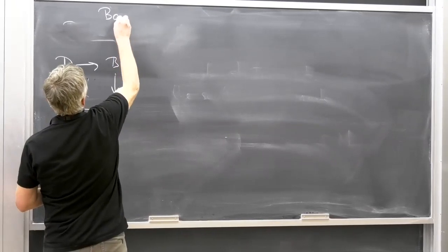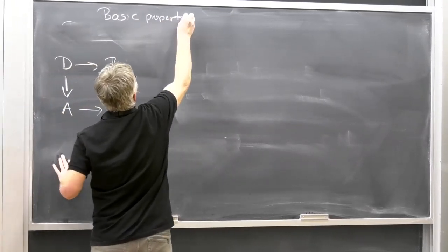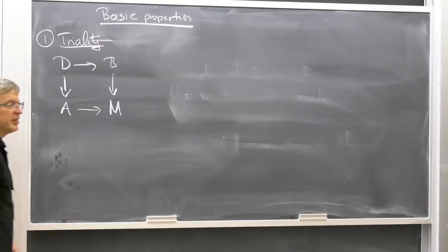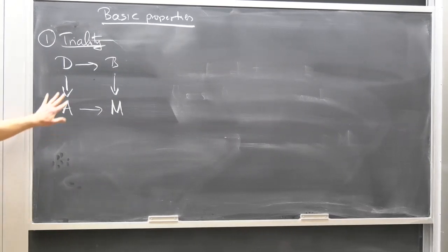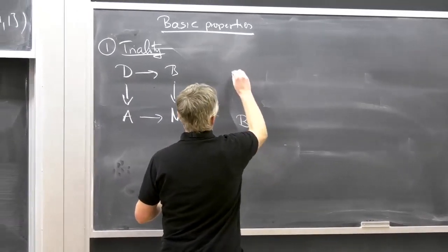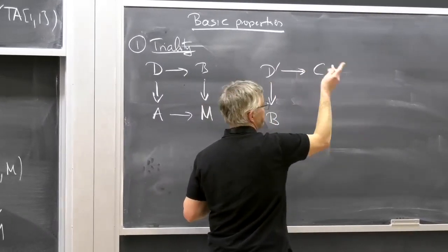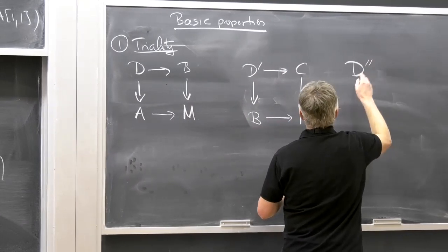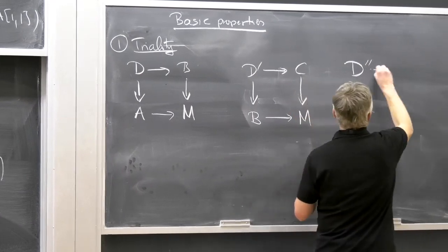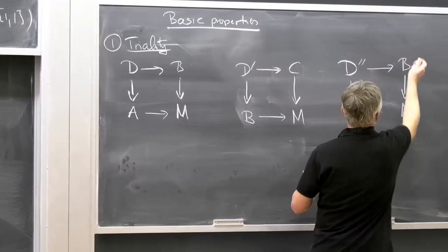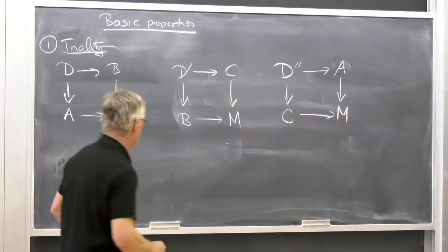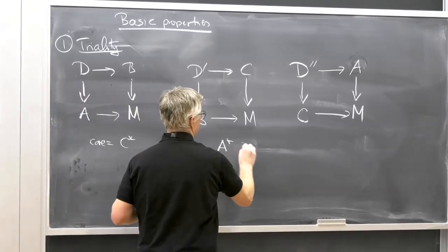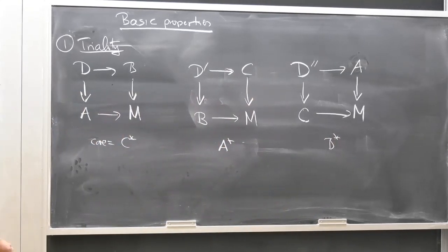Some basic properties of double vector bundles. The first is triality: if you have a double vector bundle, they always come in threes. If you have this double vector bundle, there's another one and then another one — you do cyclic permutations. The reason you use C-star for the core is that now C appears in one of the others. Here the core is C-star, here the core is A-star, and here the core is B-star — it cycles around.